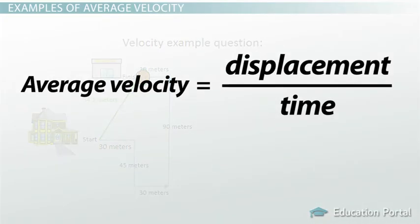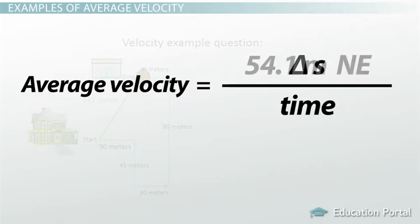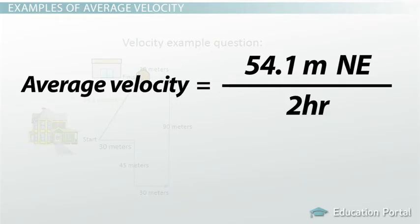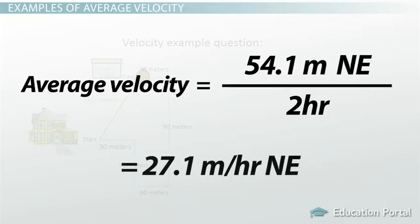Average velocity equals displacement divided by time. Displacement equals delta S, which equals 54.1 meters northeast. So average velocity equals 54.1 meters northeast divided by 2 hours, which equals 27.1 meters per hour northeast.